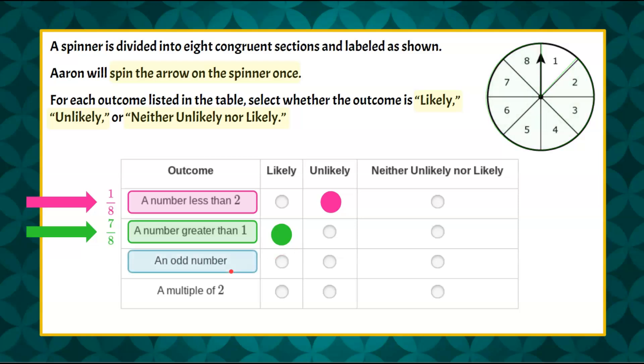Alright, third one. Odd number. Spinning an odd number is our expected outcome. When we look at our spinner, we're going to identify all the odd sections. We have one, three, five, and seven.